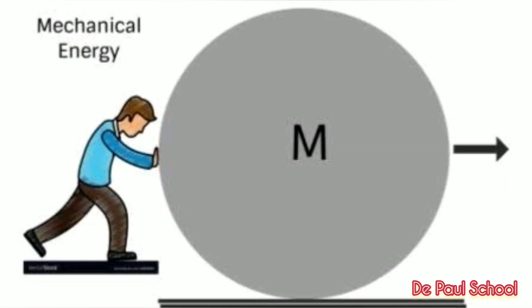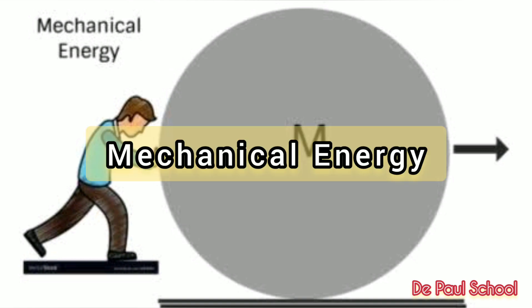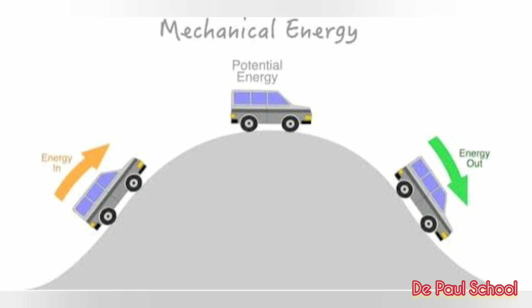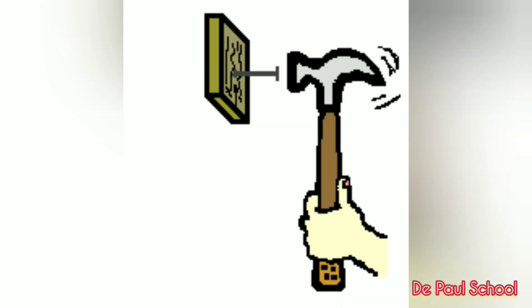The next form of energy is mechanical energy. Mechanical energy is the energy possessed by an object due to its motion or its stored energy of position. Mechanical energy can be either kinetic — energy of motion — or potential — energy of position. In other words, mechanical energy is the sum of kinetic and potential energy in an object which is used to do work.